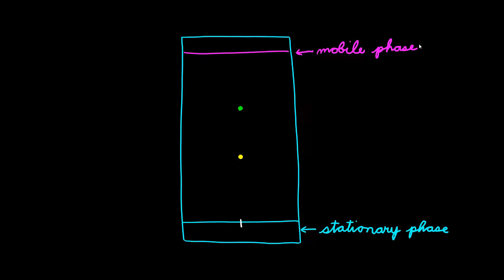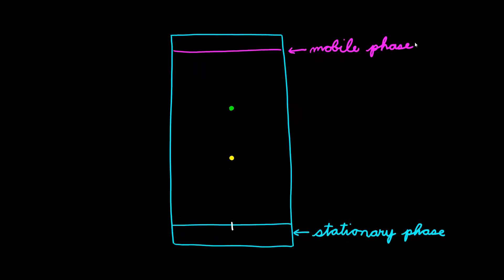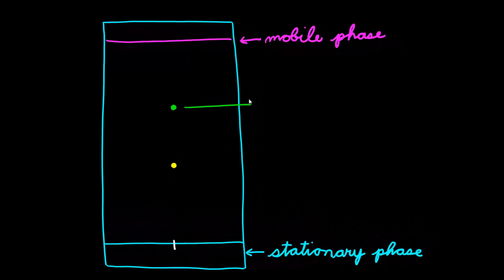So, let's look at the two spots we have here. What do we know about them based on this information? As we can see, the green spot traveled farther. This means that it was more attracted to the mobile phase, and hence is less polar.